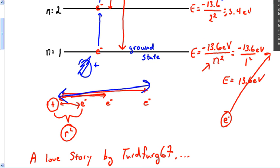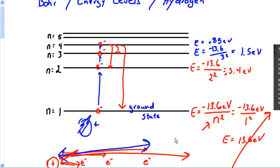As the distance gets further and further apart — as this electron gets farther and farther away — the energy it's going to take for another atom to come in and remove that electron gets less and less. So it gets easier and easier for that electron to get lost at that point.